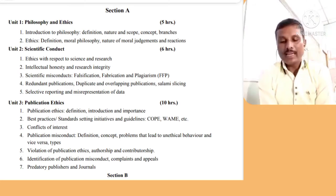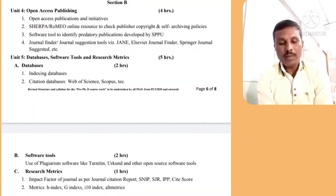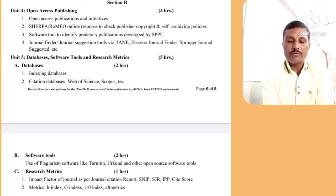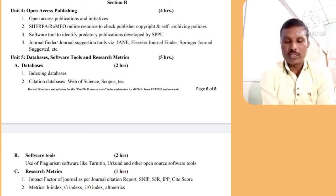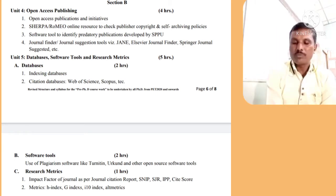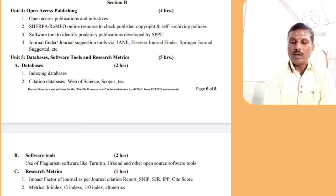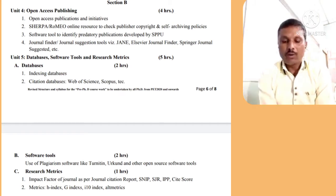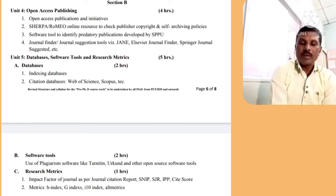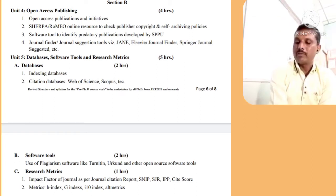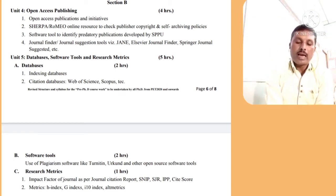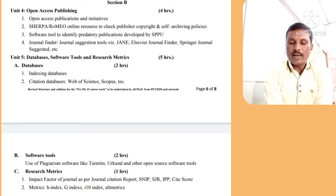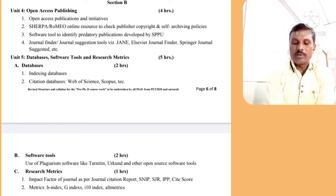That was Section A with three units. In Section B, Unit 4 covers open access publishing, open access publications and initiatives, and online sources to check published copyright and self-archiving policies. The third part covers a software tool to identify predatory publications developed by SPPU. The fourth part covers journal finder and journal suggestion tools.